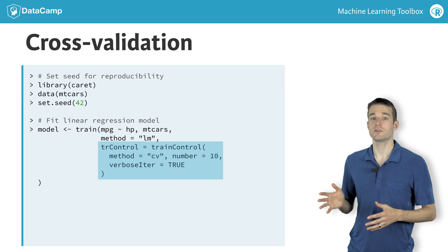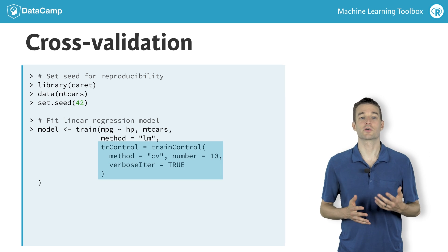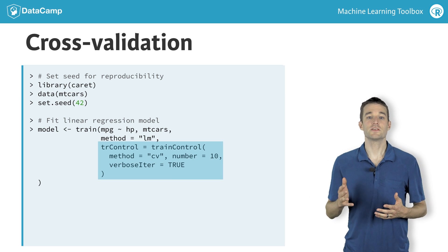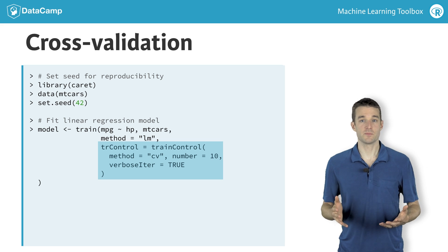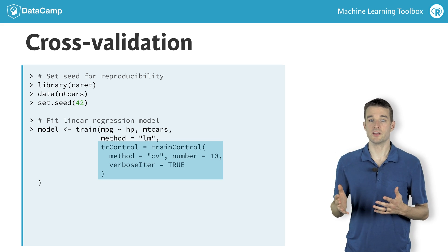The trcontrol argument controls the parameters caret uses for cross-validation. In this course, we will mostly use tenfold cross-validation, but this flexible function supports many other cross-validation schemes.